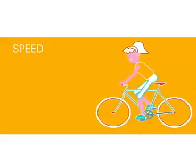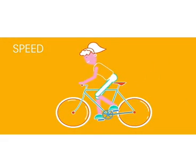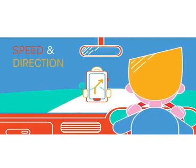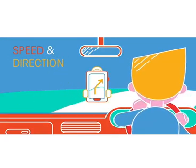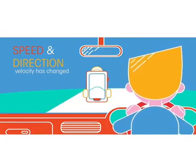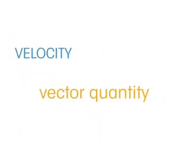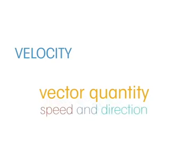If a force changes both the speed and the direction of an object, then we say its velocity has been changed. This is because velocity is a vector quantity that measures both speed and direction.